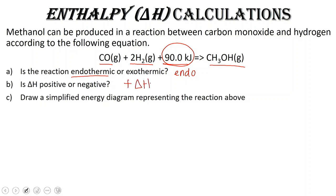Being that it's an endothermic reaction, delta H has to be positive. If we briefly represent the energy diagram of this reaction — remember for endothermic we've got to put energy in — the potential energy of the products is going to be greater than the potential energy of the reactants. We can draw this as an endothermic reaction with potential energy on the y-axis and reaction progress on the x-axis.